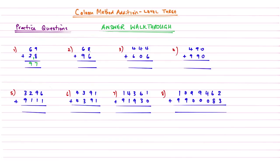Moving on to question number 2: 8 add 6 gives me 14, so we carry the 1 and write the 4 underneath — notice I've left a little gap between each column so there's space to write the carried number. Then 6 add 9 gives me 15, but I've got this 1 to add as well, so that gives me an answer of 16.